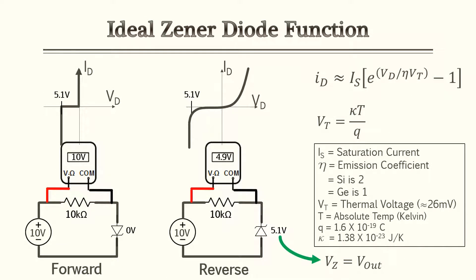The Zener diode functions just like the junction diode with a few exceptions. In the forward bias condition the Zener diode does function just like a junction diode. However, in the reverse bias condition the voltage drop across the diode is not zero — instead it's 5.1 volts for that particular diode, because that's the voltage rating for that diode. Anytime you run the diode in reverse, whatever that rating is, that's what you're going to have across that diode. Hence if you have a load resistor in parallel with that diode, that's what the voltage across that resistor would be — why some references say VZ equals VL.